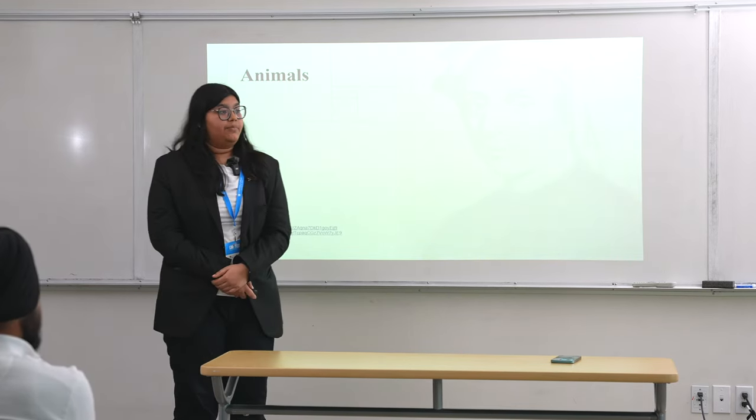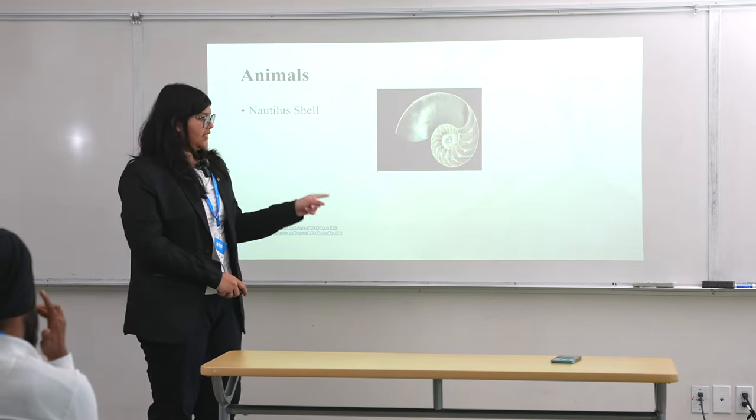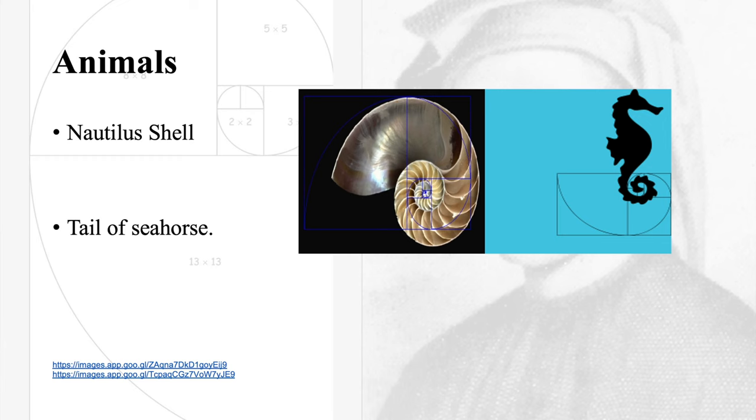Now we're going to look at some examples of Fibonacci sequence in animals. There's a nautilus shell. And then there's a tail of seahorse.